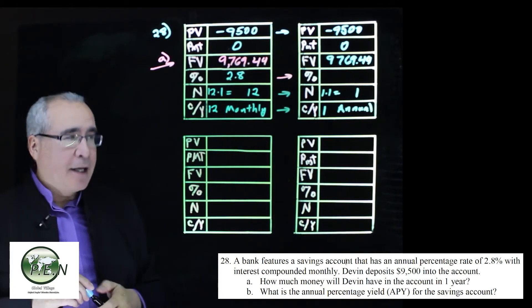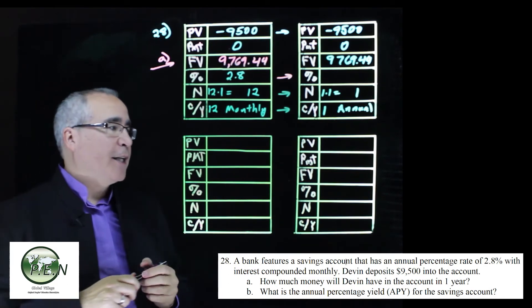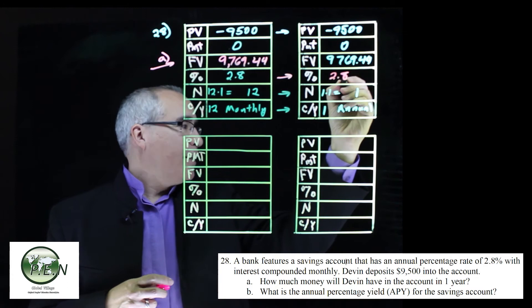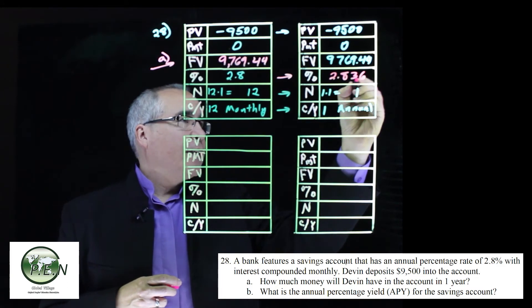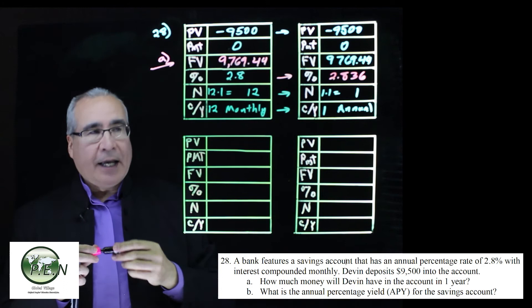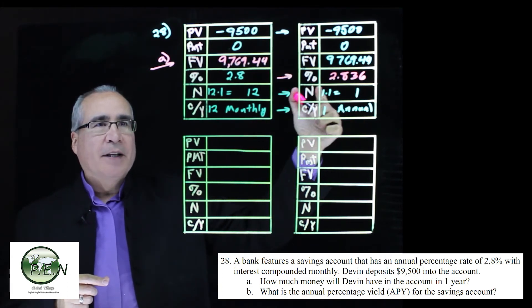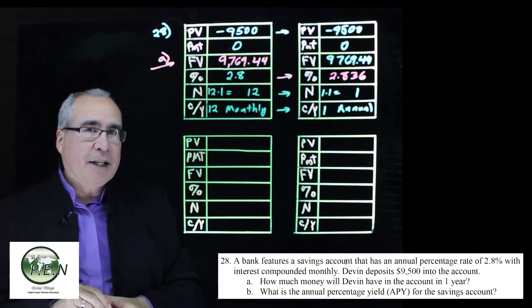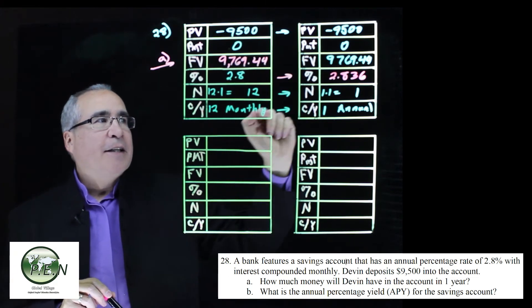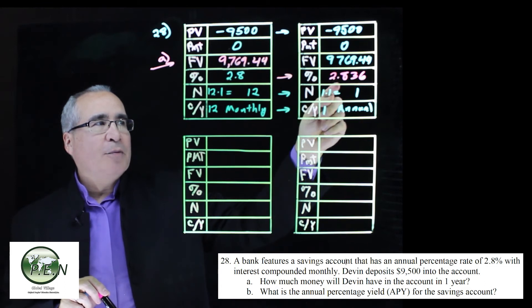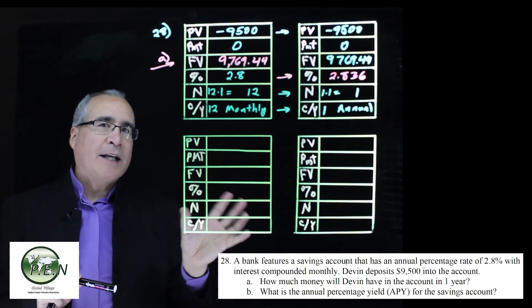Now we click on the rate button, the interest rate, and it will give us 2.836. So having the compounding is what gives us this additional return. The contract says 2.8% monthly, but that's effectively the same as getting an annual return at 2.836%.